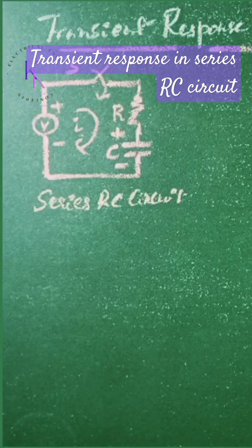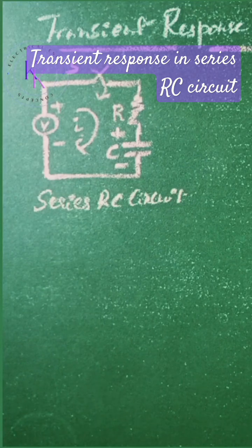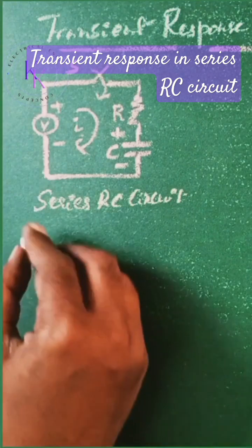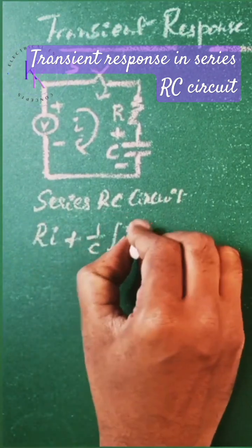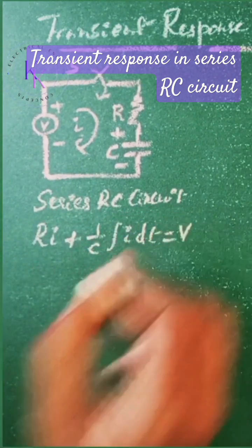The current at t greater than 0 being I, application of KVL leads to Ri plus 1 by C integral of I dt equals V.